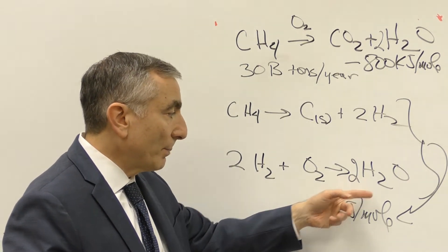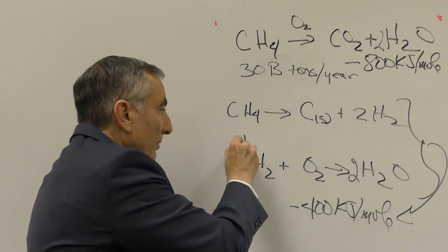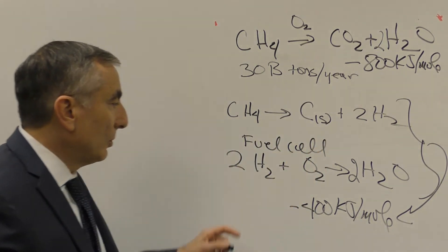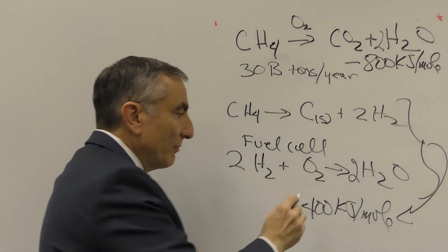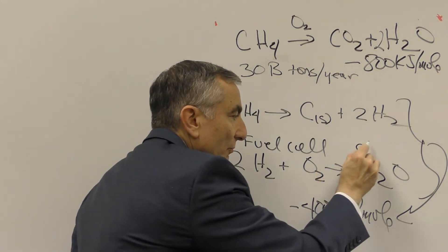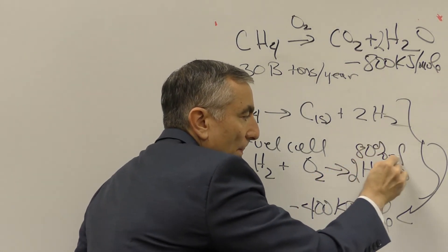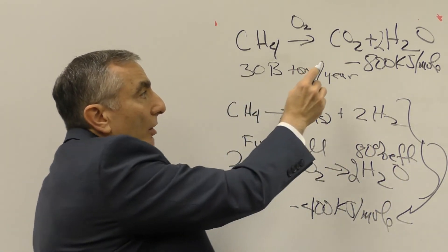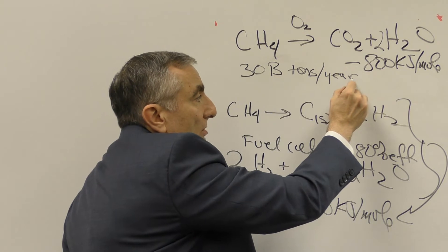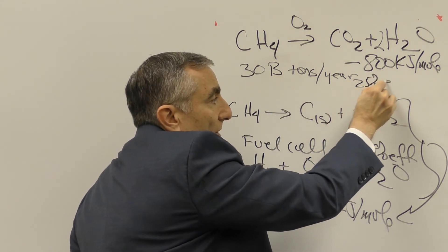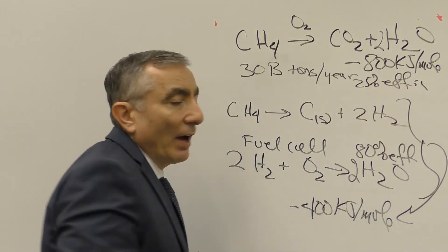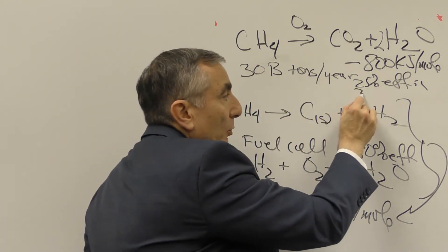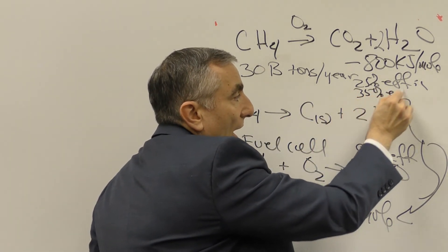But here, the only byproduct is water. This is a fuel cell. This is what's done in a fuel cell. So this can be 80% efficient. You can have 80% efficiency in a fuel cell. This combustion, normal combustion in a car on the highway is only about 25% efficiency. In town and about 35 to 40% efficiency on the highway.